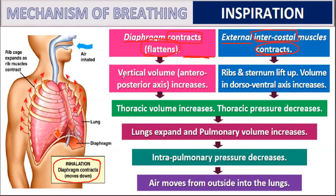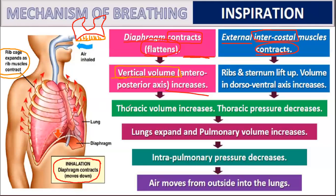When the diaphragm flattens, the vertical volume increases — there is extra space created. The lungs occupy that expanded portion. When the external intercostal muscles contract, the ribs and the sternum lift up and the rib cage expands. This increases the volume in the dorsoventral axis, so the overall volume of the thoracic region increases.